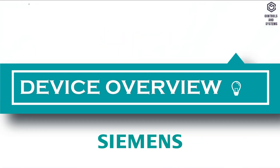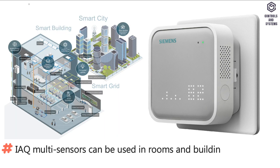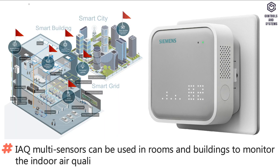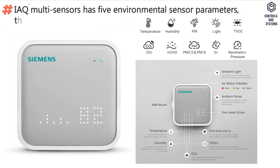Device Overview: IAQ Multisensors can be used in rooms and buildings to monitor the indoor air quality status. The IAQ Multisensor has five environmental sensor parameters.